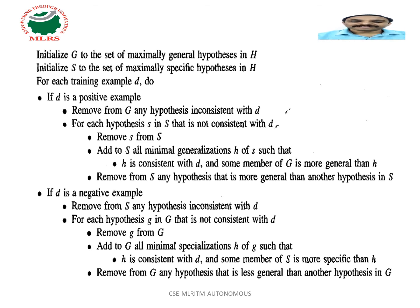In the case of a negative example, remove from S any hypothesis inconsistent with D. For each hypothesis in G that is not consistent with D, remove G from G and add to G all minimal specializations H of G such that H is consistent with D.